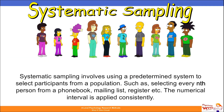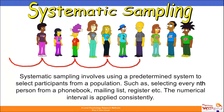Then we have systematic sampling. Systematic sampling involves using a predetermined system to select participants from a population, such as selecting every nth person from a phone book, a mailing list, or a register, and the numerical interval is applied consistently. For example, I might select every second individual in a row, applying that consistently, so every second person would be part of my study.